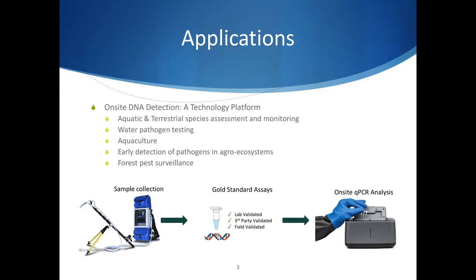eDNA was first used in 2008 as a tool for detecting the presence of an aquatic invasive species, the American bullfrog, in low abundances. Since its inception, eDNA has been realized as an extremely useful tool for biomonitoring of almost any species. The high sensitivity of eDNA methods allows us to effectively monitor species in very low abundances without having to physically capture specimens, saving time and costs, and providing more accurate information about habitat occupancy.